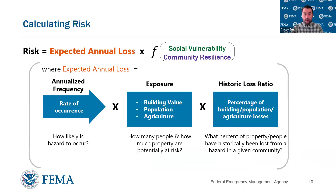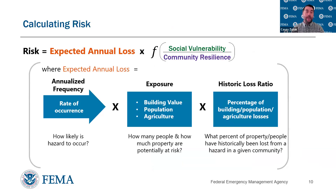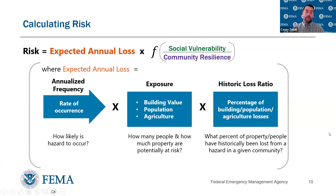How do we bring all of this data together? We define risk as a product of the expected annual loss and a function of social vulnerability and community resilience. In other words, we take on average how much loss a hazard may occur in a given year, annualize that for each of the 18 hazards, add them together, and then either increase or decrease that loss based upon the relative impact of social vulnerability and community resilience — identifying which communities may see increased losses because they're more at risk and more in need.